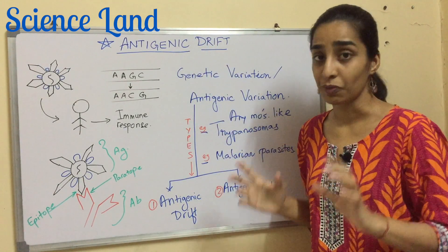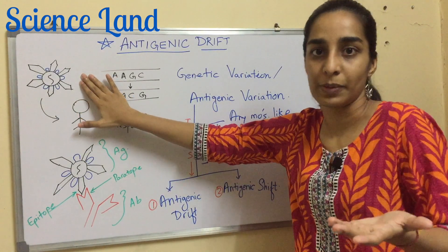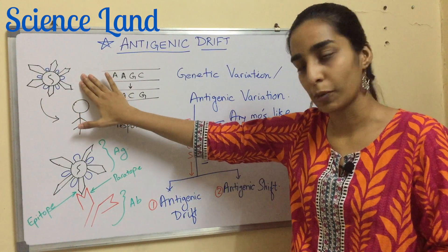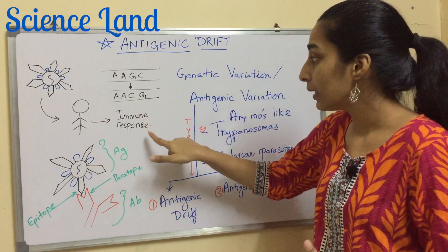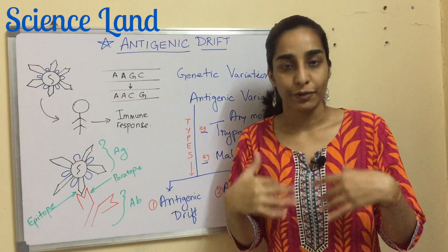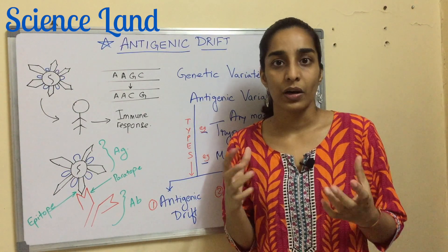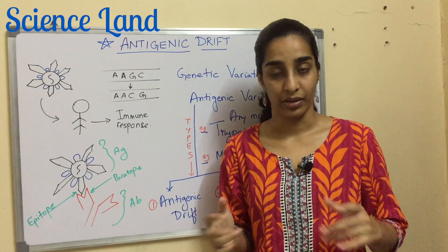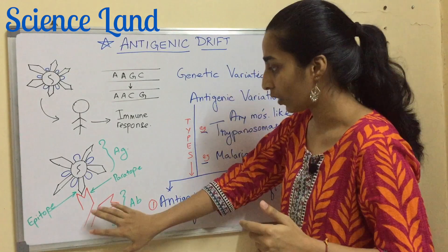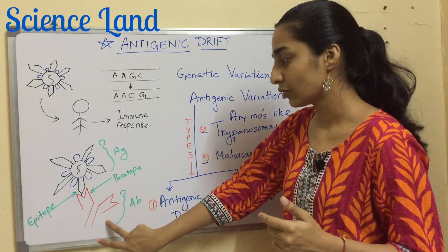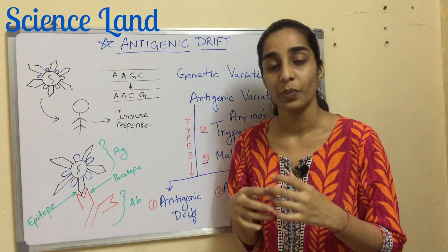Before starting the main process, we need to know certain terms involved. Any foreign substance which invokes an immune response is known as an antigen. Once it is inside a human body, it will initiate an immune response. After the human body is infected with an antigen, it will start producing neutralizing bodies — antibodies.